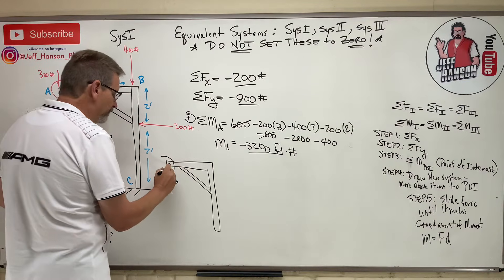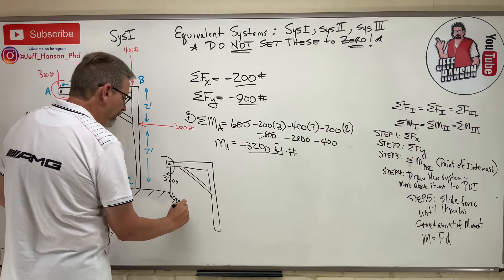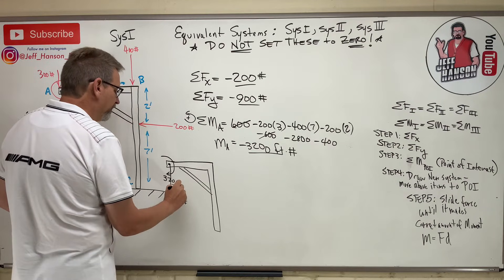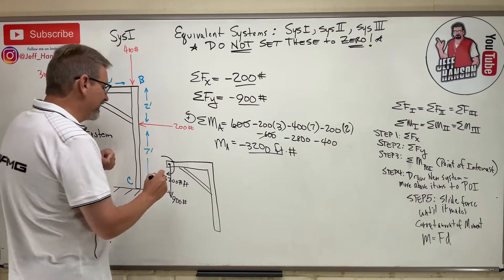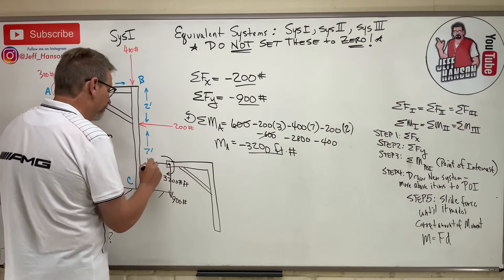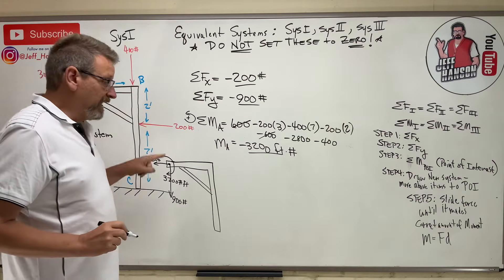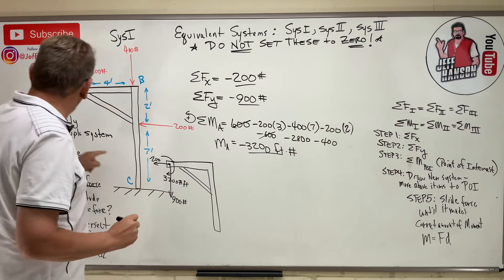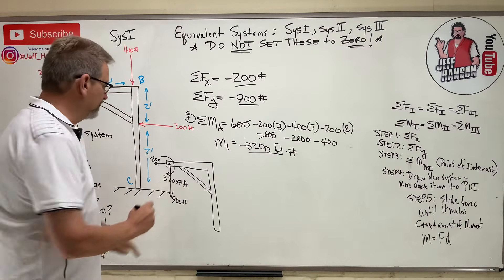The y is 900. This guy is a pound-feet. And then the x is negative also. So, again, if they asked me for a force couple system for this number 2 here, I would be done at this point. This is my system 2.